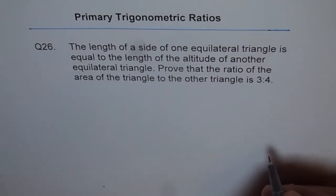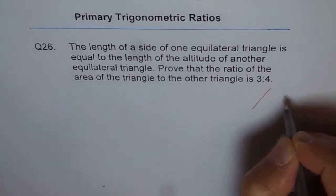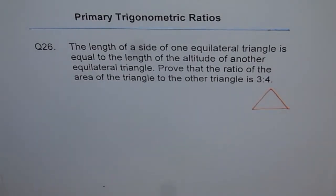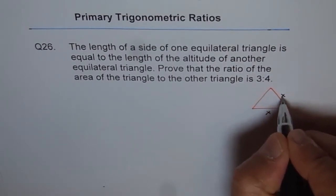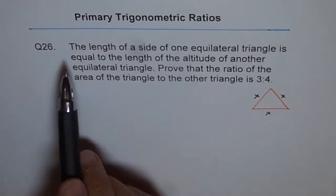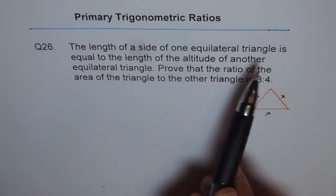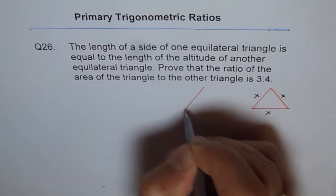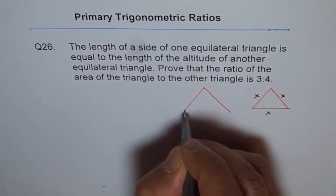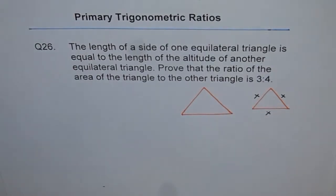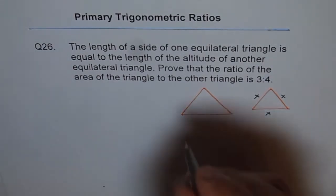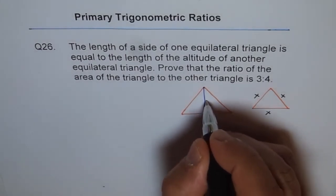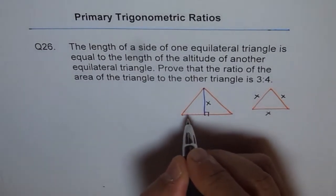Let's look into these triangles and solve the problem. Let's say this is one equilateral triangle whose sides are x units — this is x, this is x, and this is also x. The length of the side of one equilateral triangle is equal to the length of the altitude of another. So let's consider the other triangle where the altitude is x. Altitude means 90 degrees, and this side is x. Since both are equilateral triangles, each angle is 60 degrees.